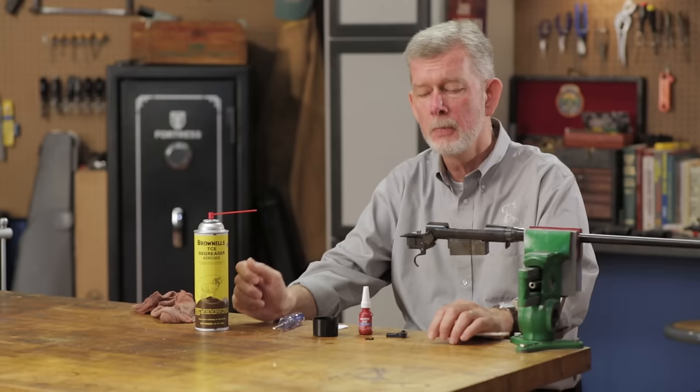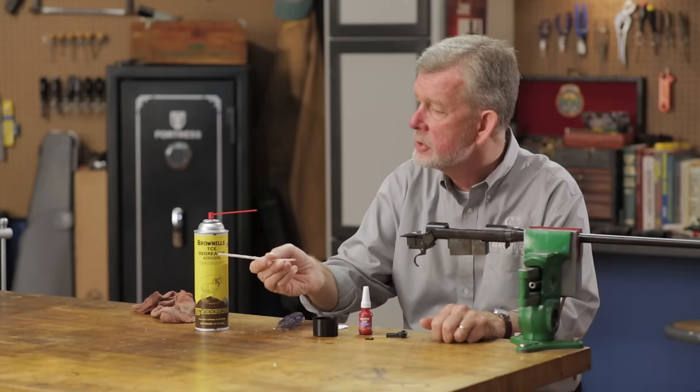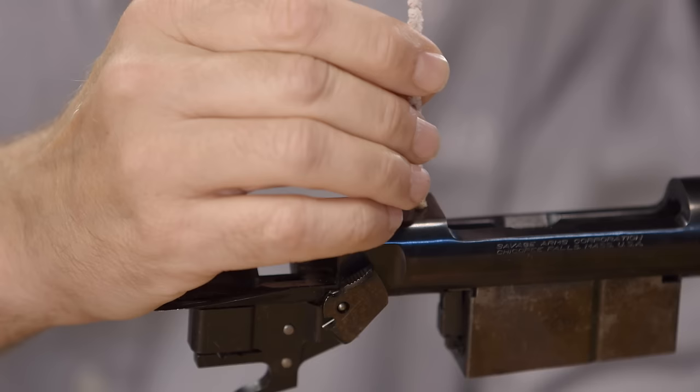Here we're going to show you how to do it. I've got some denatured alcohol here, but you can use acetone, TCE, brake cleaner, anything that takes oil off. Put a little on a pipe cleaner and clean out the interior threads.